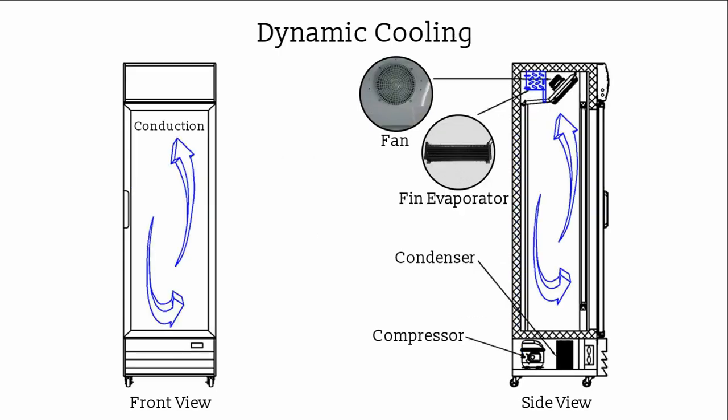The dynamic cooling system, also referred to as the ventilating cooling system or fan cooling system, incorporates a fin evaporator and an inside fan to directly distribute the cold energy from the evaporator to the interior cabinet. The fin evaporator is accessible and installed inside the cabinet, positioned behind the cover of the inside fan. The pull-down time to below 10 degrees Celsius is 20 minutes for an empty load and 18 hours for a full load. The price is the highest among these three cooling systems, about 50 US dollars higher than static cooling.